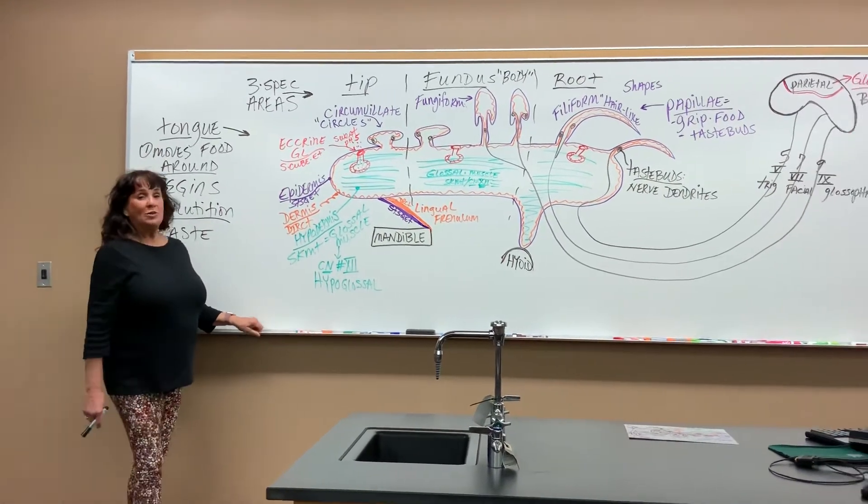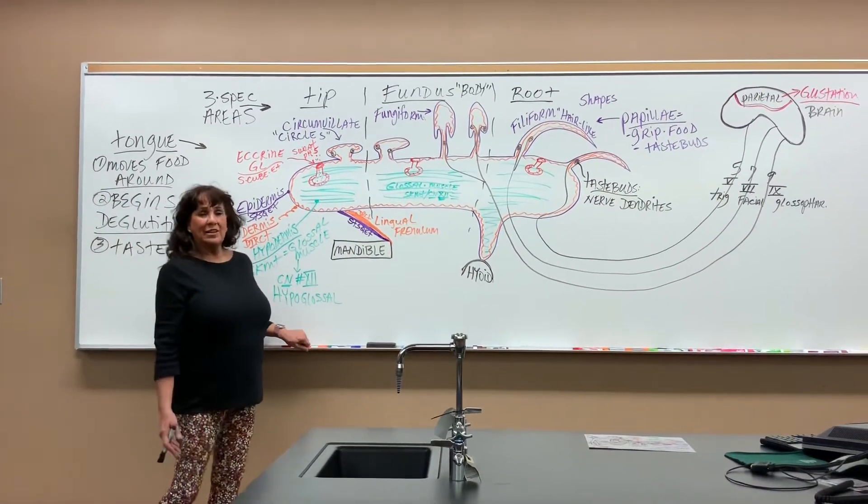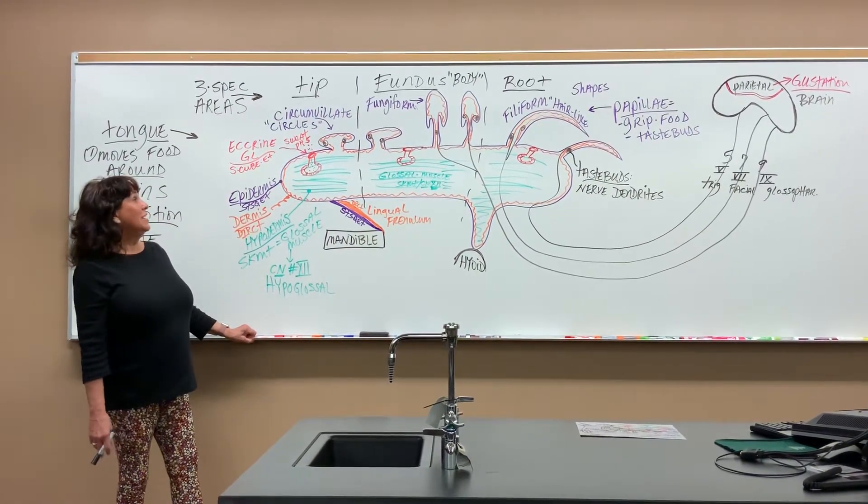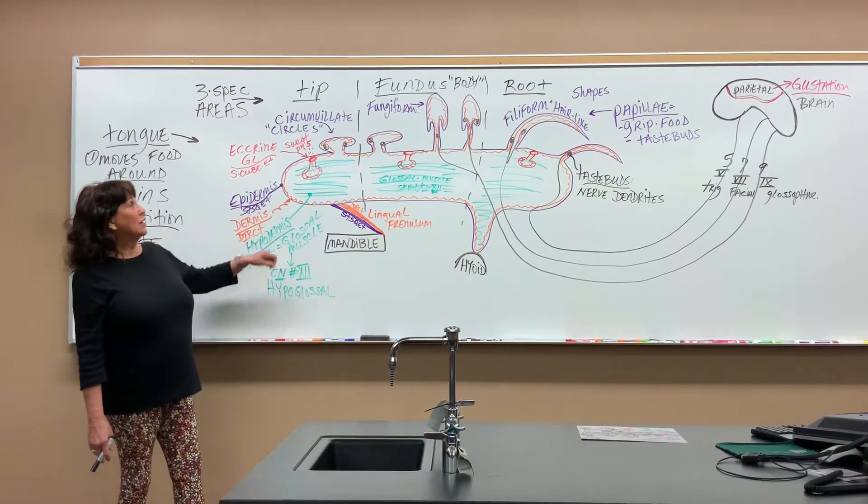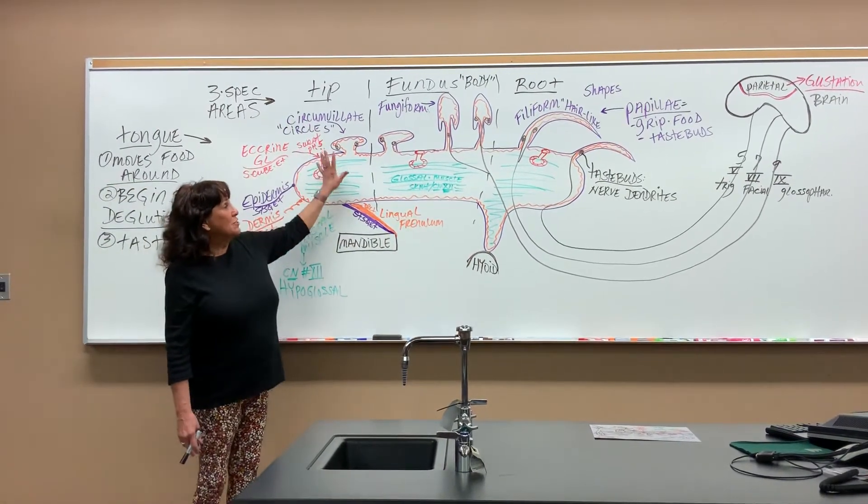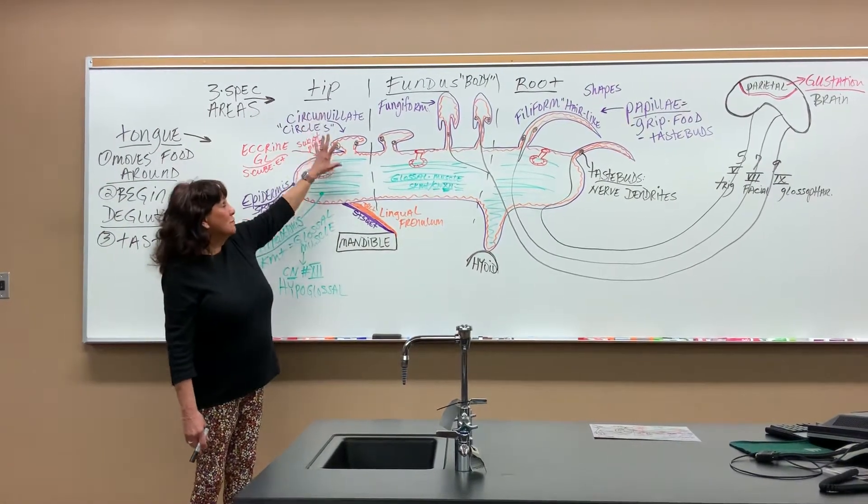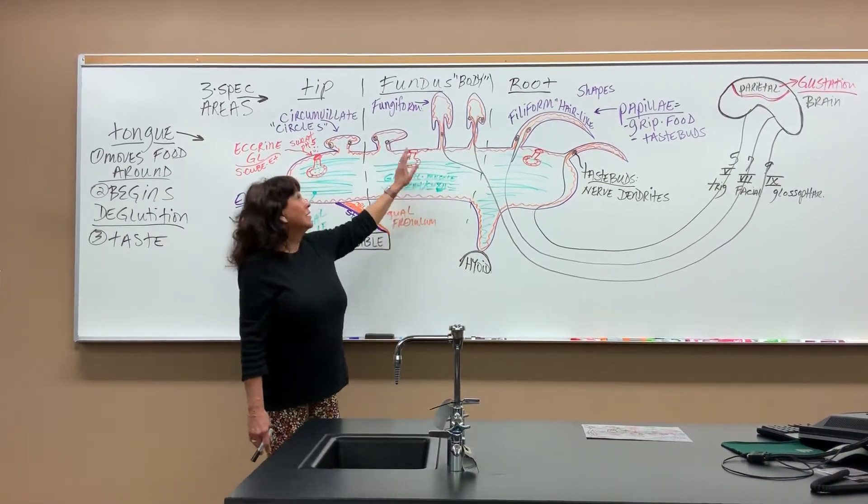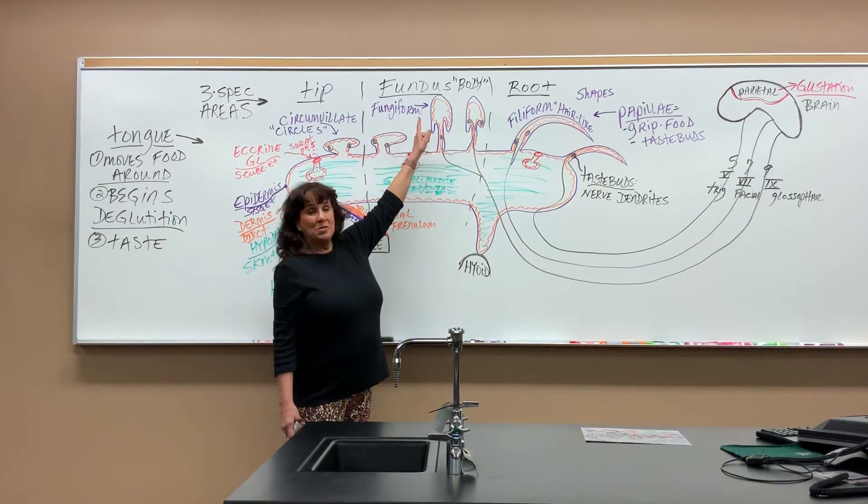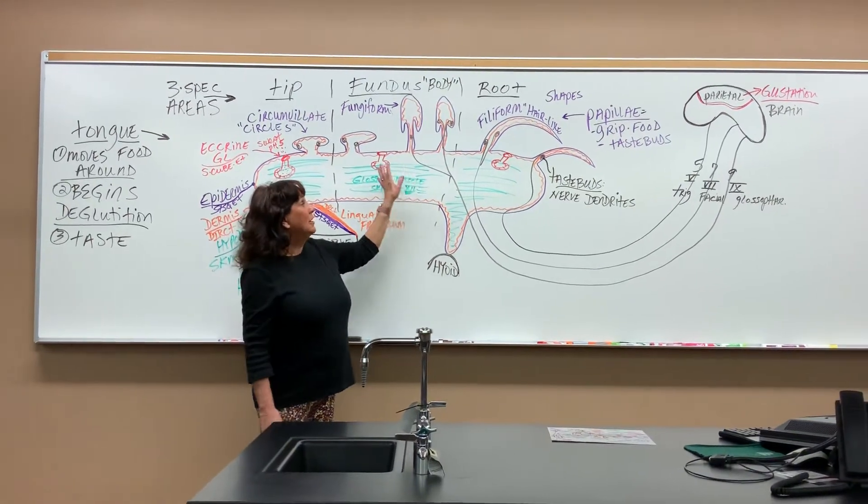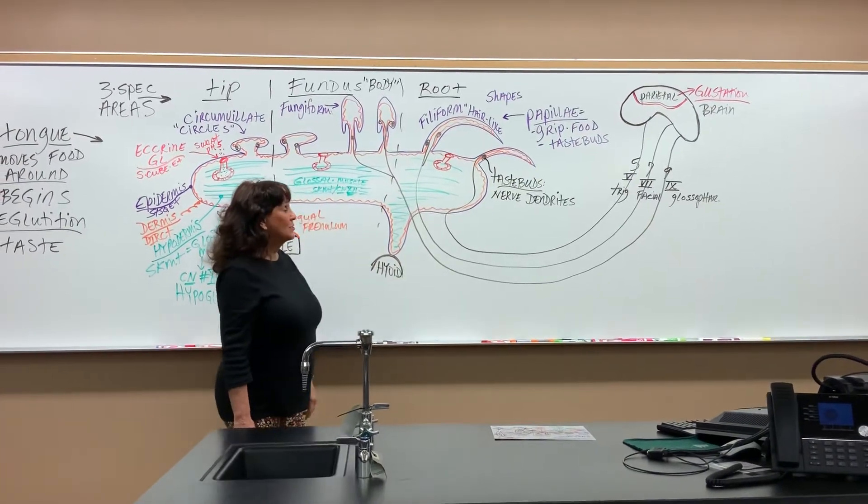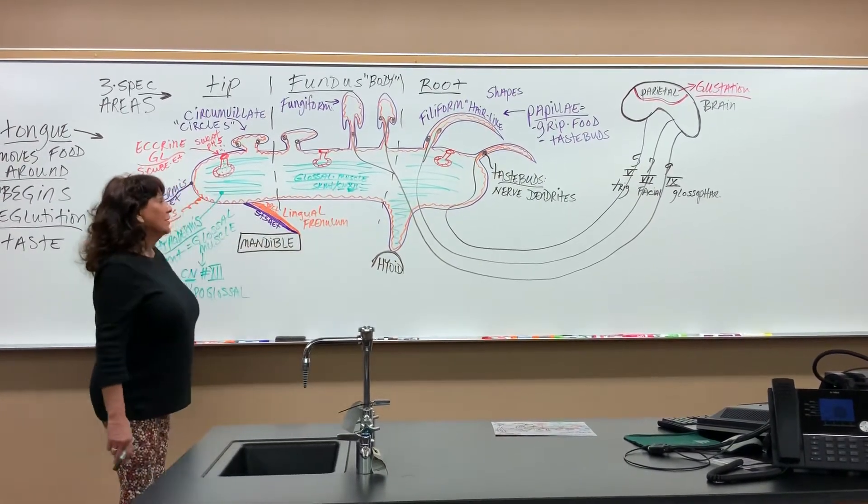When you look at the tongue, you should identify the three main specific areas. The three areas are the tip, which is the front part. The main part in the middle is called the fundus, which means body or main part. And then we have the root, which is the back end of the tongue.